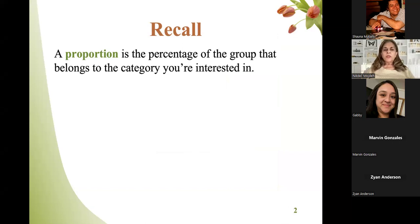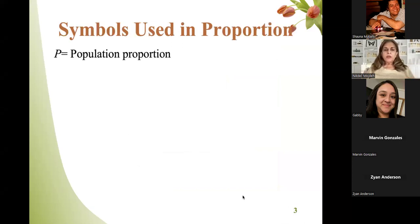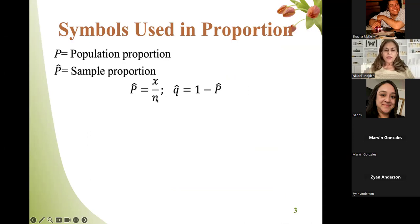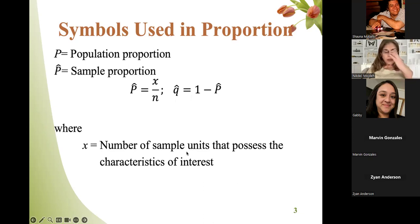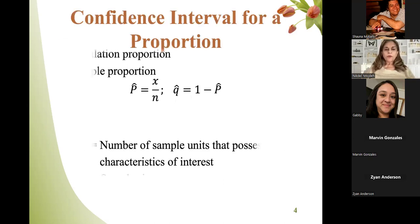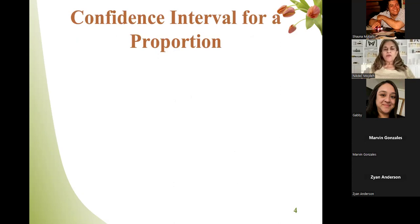Recall that in the previous chapter 6.3, we talked about proportion. Proportion is the percentage of the group that belongs to the category we are interested in. Population proportion is P. Sample proportion is P-hat. P-hat equals X over N. The complement Q-hat is 1 minus P-hat. N is the sample size, and X is the number of sample units that possess the characteristic of interest.